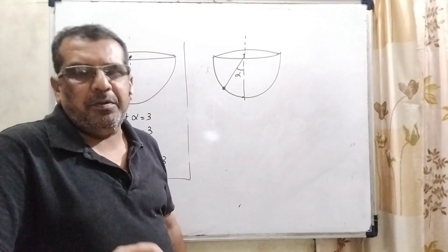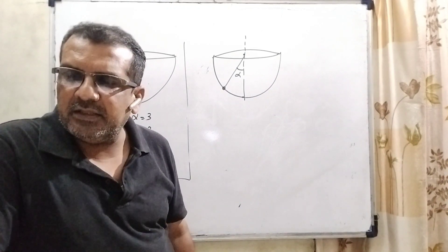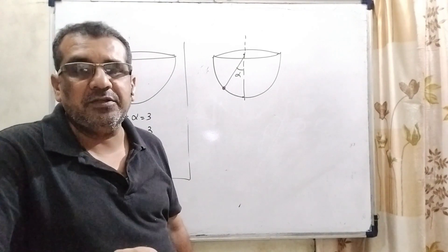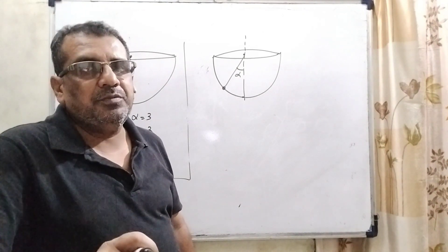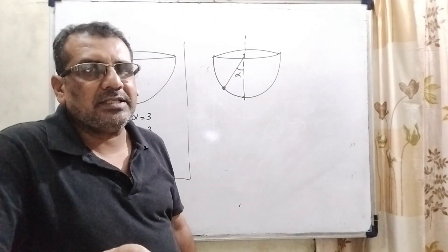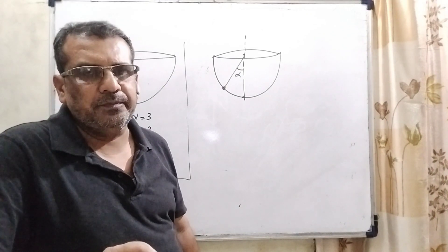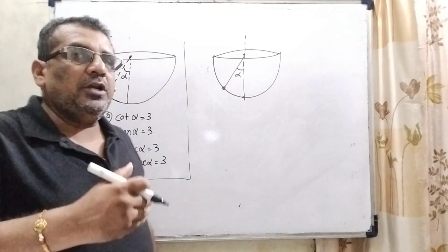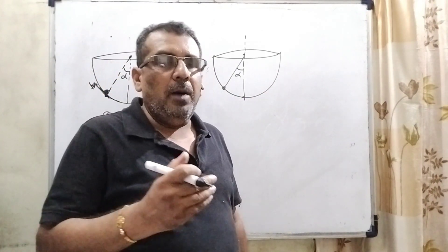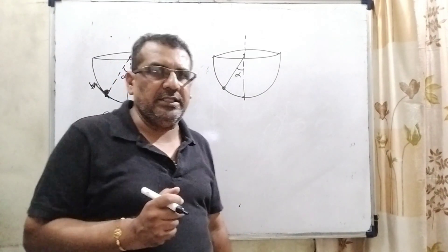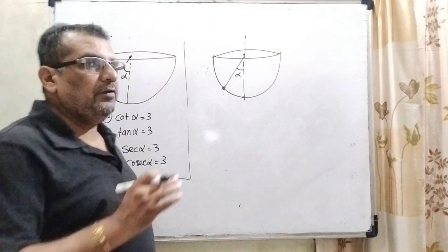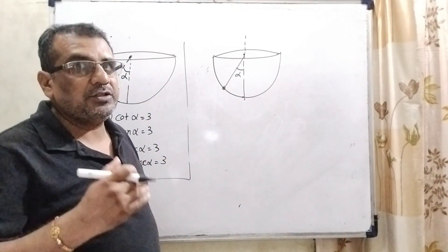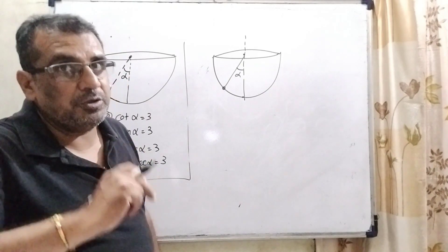Dear students, here two things are very important. First, we are given that the insect crawls up the hemispherical surface very slowly. What does it mean? It means the object is moving very slowly — acceleration is approximately zero. And the second thing, you know very well: generally, friction force acts in the opposite direction of motion. But there are two particular cases where the direction of friction is the same as the direction of motion.